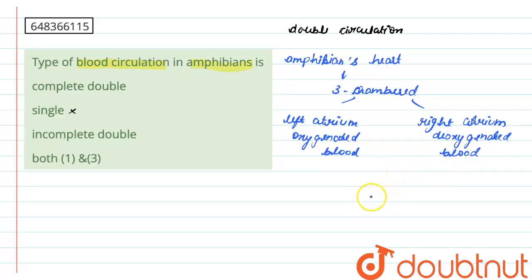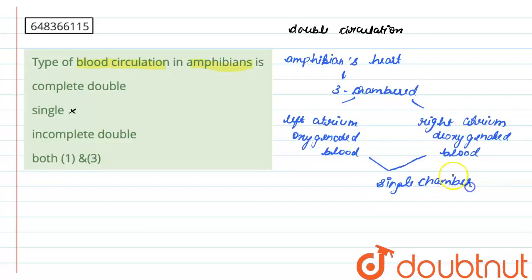Blood from both chambers is combined in a single chamber. Since there are only three chambers in the amphibian heart, one receives oxygenated blood, the second receives deoxygenated blood, and blood mixing always takes place in the only remaining chamber.